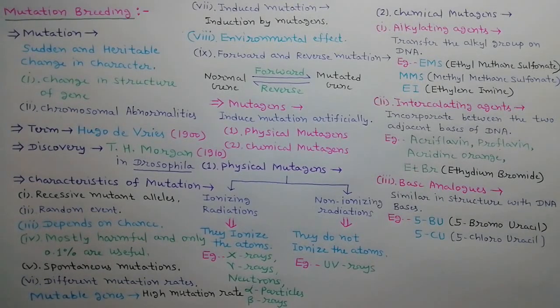Third is base analogues. These chemicals show similarity with DNA bases in their structure. Hence they can easily incorporate into DNA during DNA replication. For example, 5-bromouracil and 5-chlorouracil.